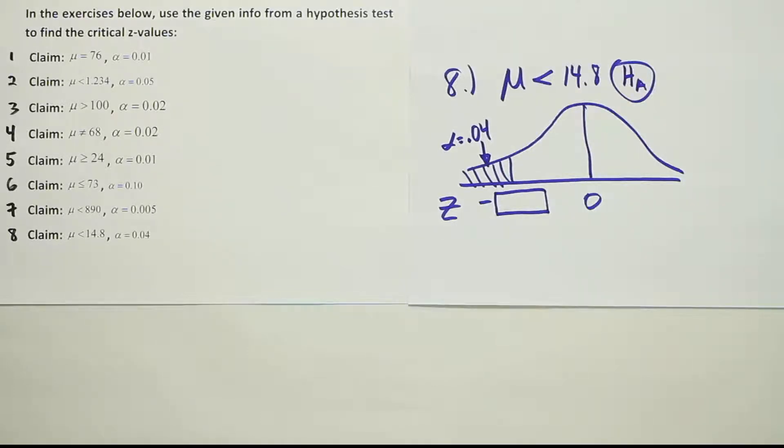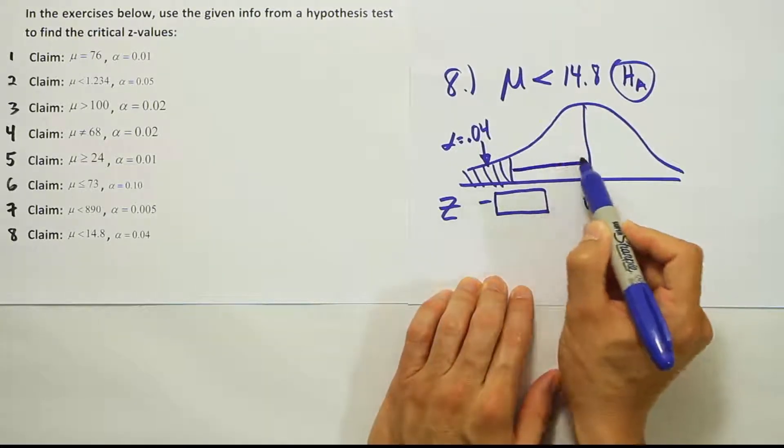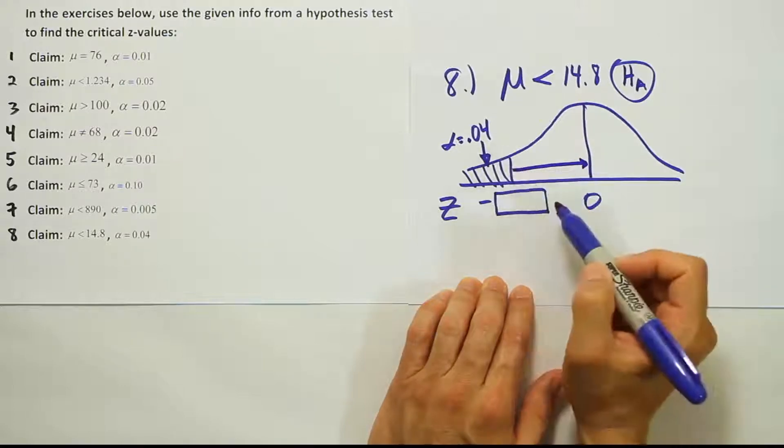That's alright, nothing wrong with using the z-table. But in order to do that, remember the z-table needs this area from here to here. So we're going to need to figure out what that would be.